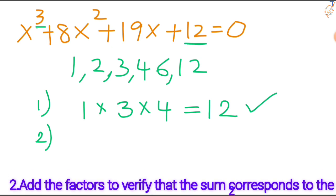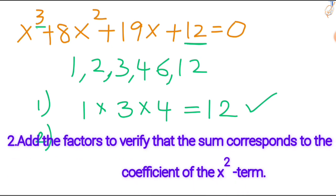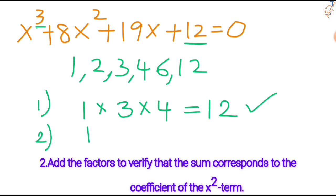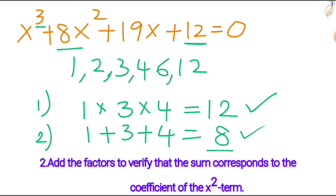Condition 2: add the factors to verify that the sum corresponds to the coefficient of the x squared term. Add these factors: 1 plus 3 plus 4 equals 8. Is it the same as the x squared coefficient? Yes. So the second condition is also satisfied.